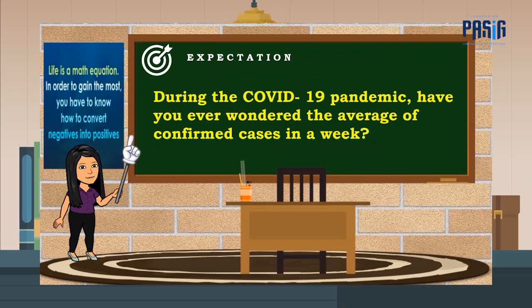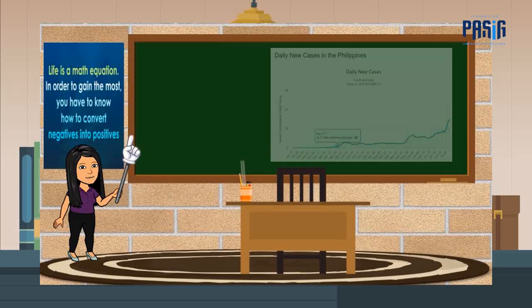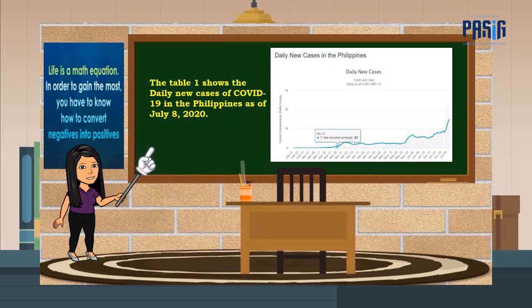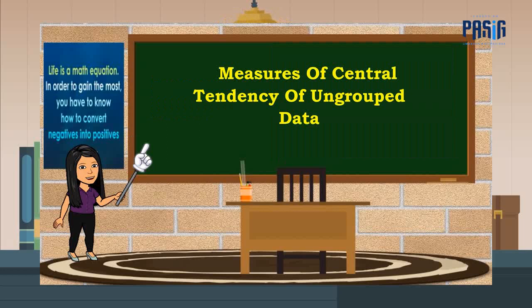During the COVID-19 pandemic, have you ever wondered the average of confirmed cases in a week? Table 1 shows the daily new cases of COVID-19 in the Philippines as of July 8, 2020. If you notice, there is a 7-day moving average of 82. Do you wonder how they solve it? It is by using the measures of central tendency.